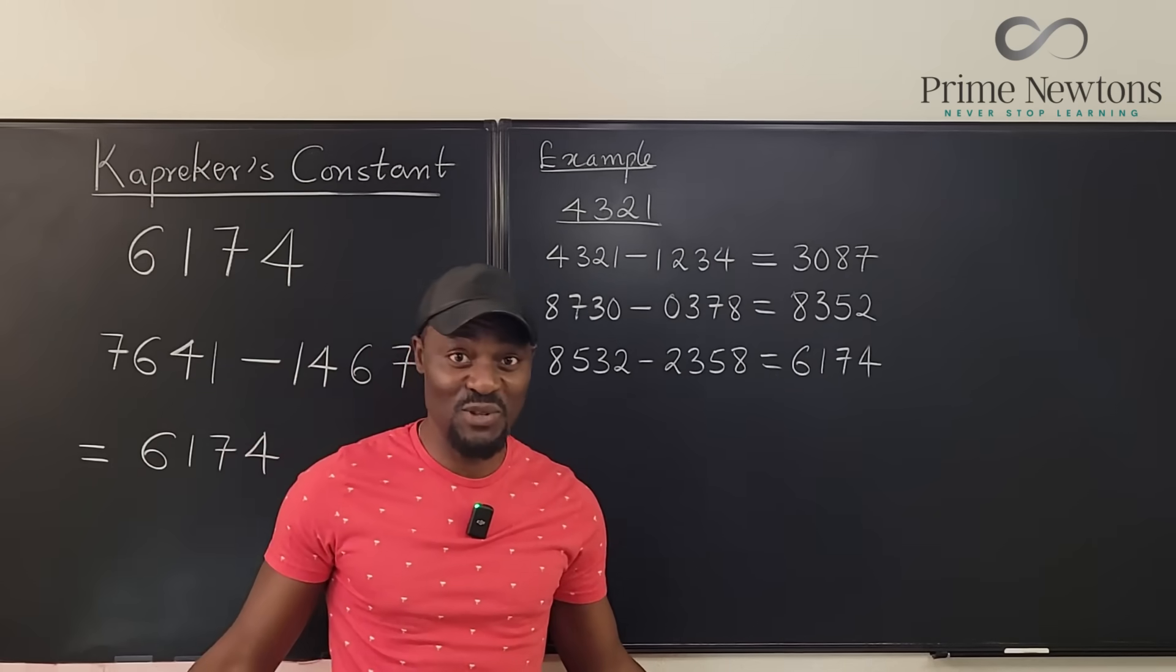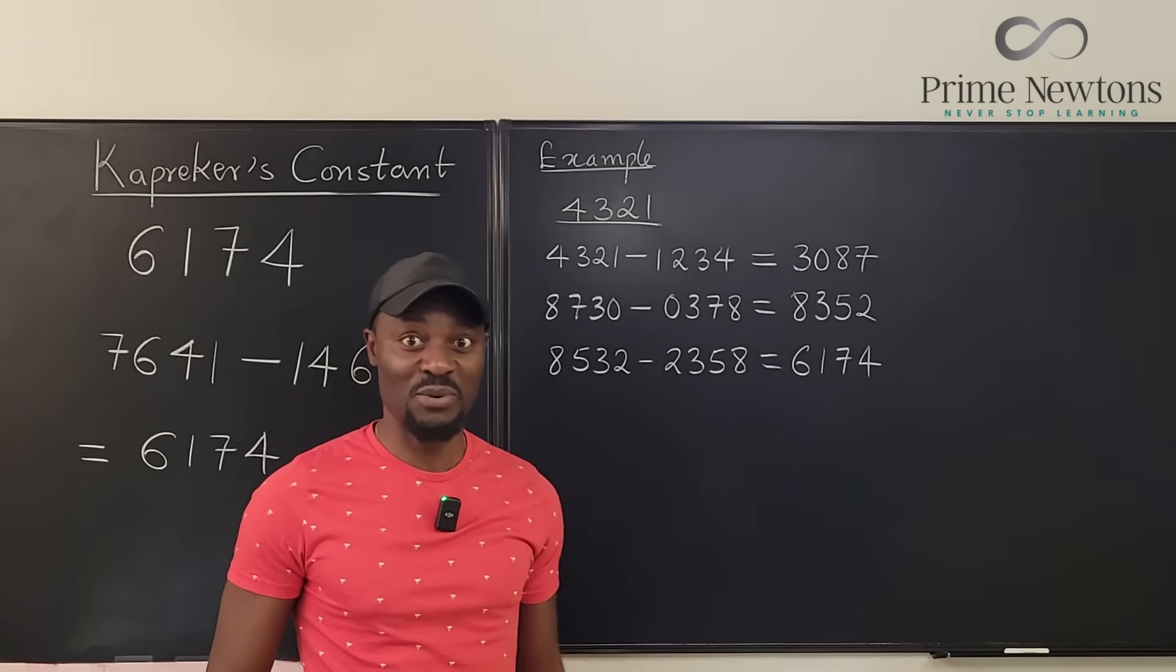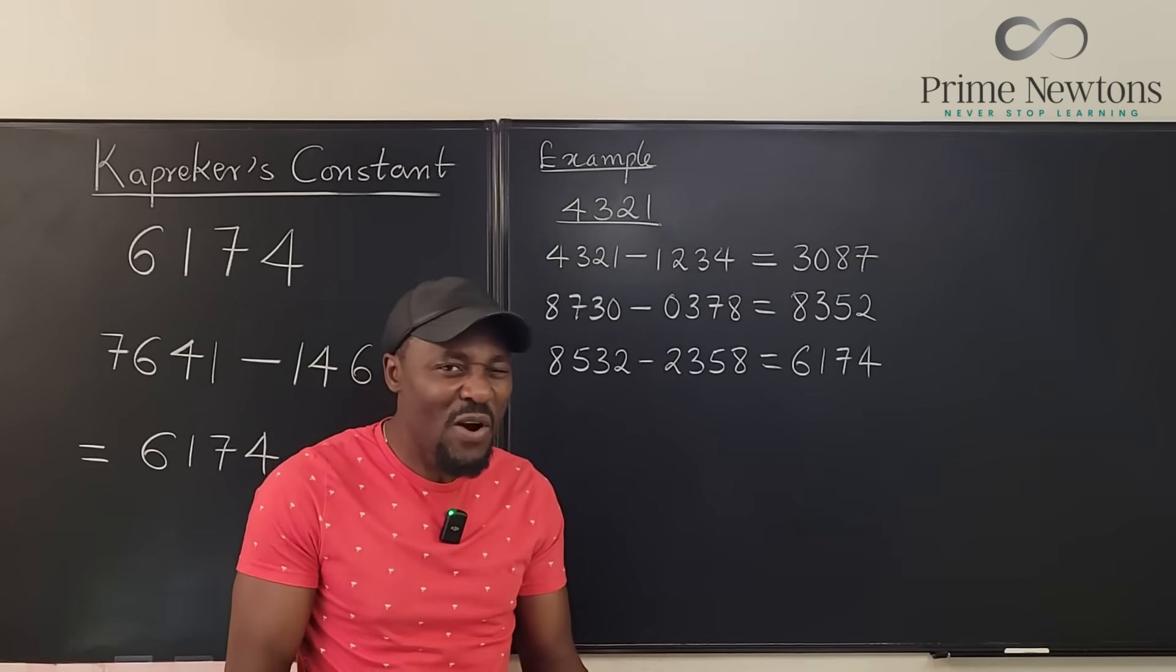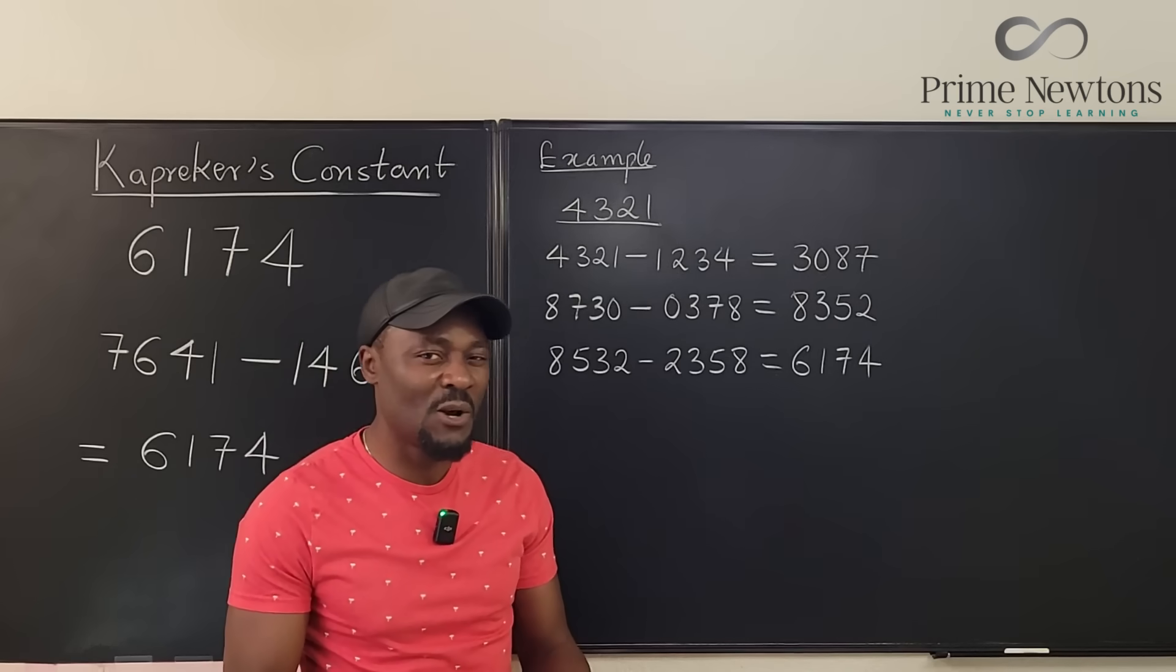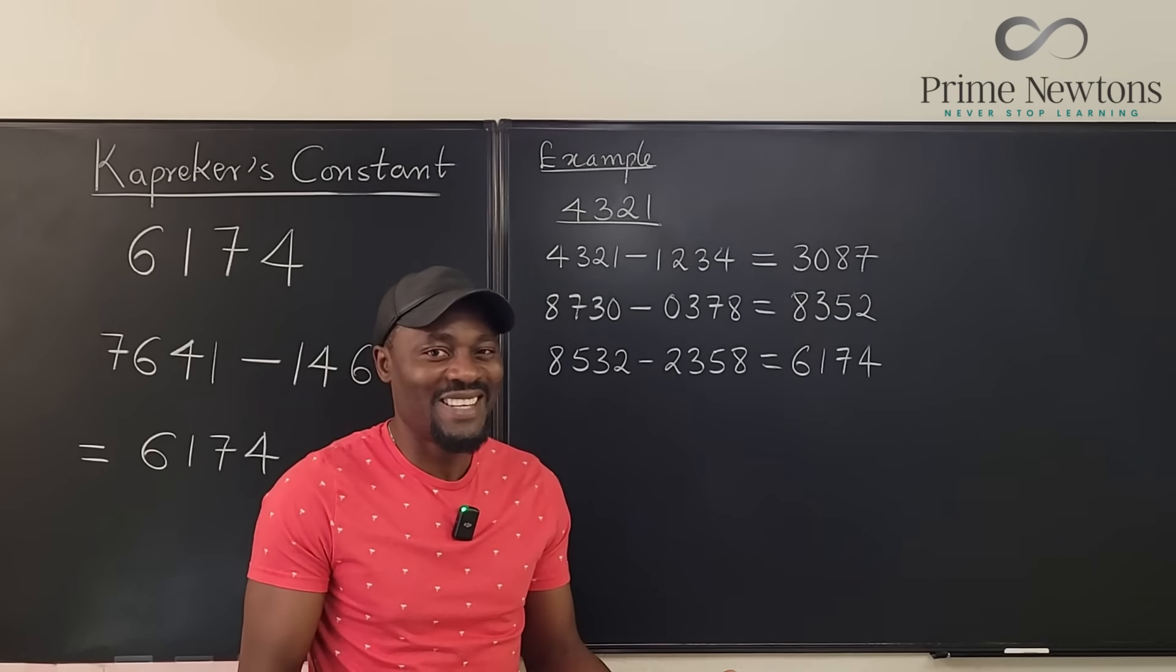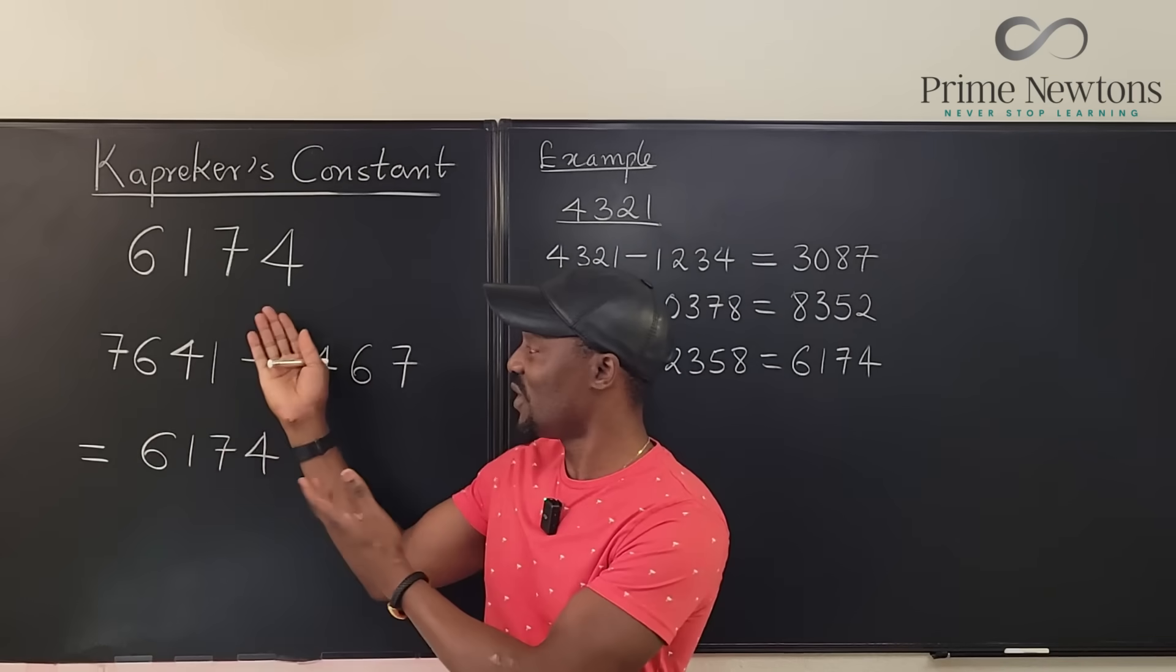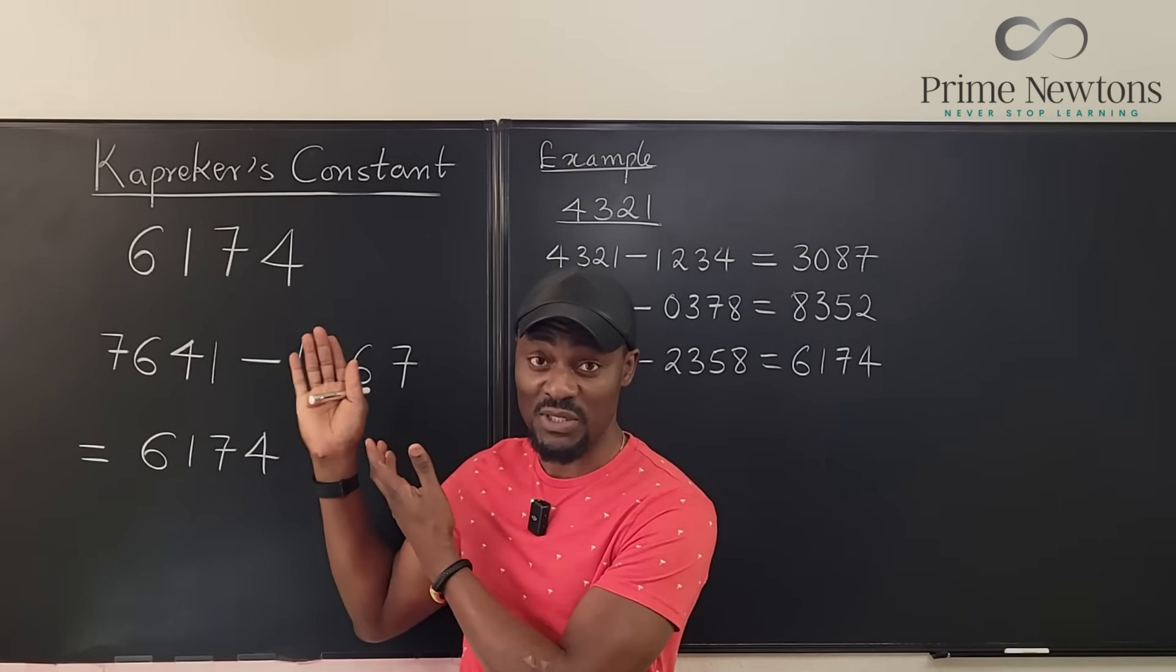Now you can play this game with your friends and say, you pick a number and let's see who arrives at 6,174 the fastest. Now can you figure out what rules you need to follow? Yeah. I'm just leaving it. So like I said, I'm not teaching you anything. I'm just introducing you to this wonderful number 6,174.